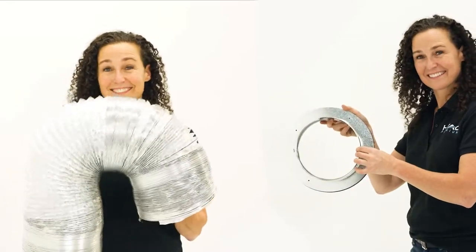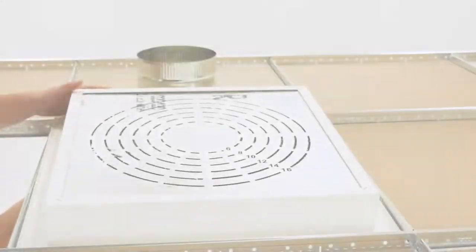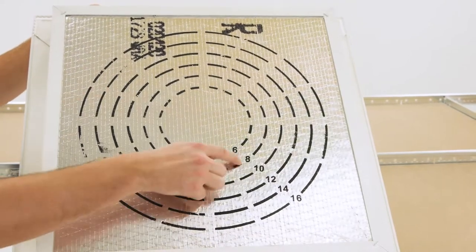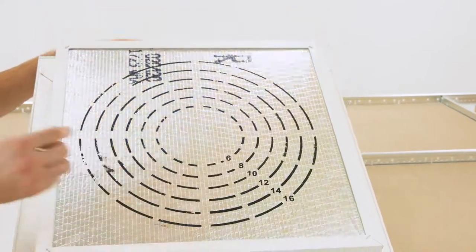To attach this grill to your HVAC system, use an adhesive collar ring and flexible aluminum duct. Use the guide on the back of the insulation to cut a hole that matches the size of your collar ring.